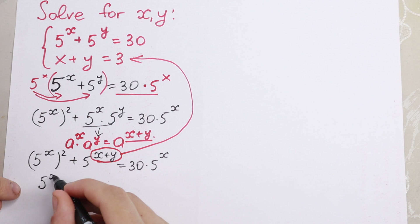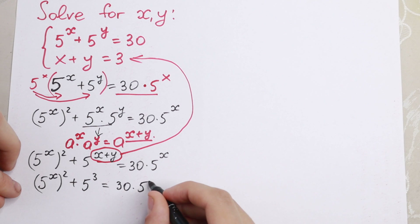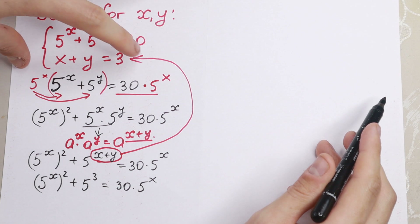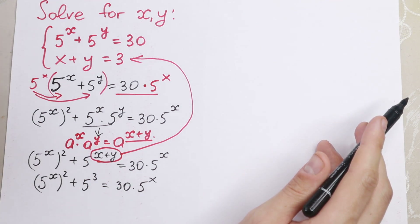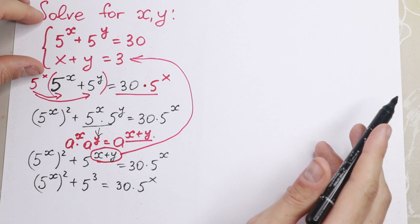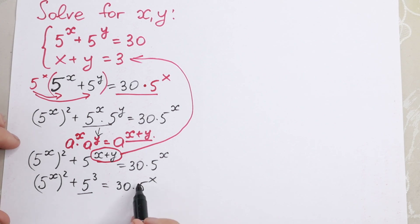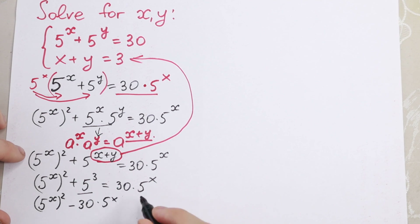What we will have? 5 to the power x squared, plus 5 cubed, equal to 30 times 5 to the power x. I hope you understand this step: firstly, multiplying both sides by 5 to the power x; secondly, using this rule; and moreover, x plus y equals 3. Right here, 5 cubed equals 125. And it's good to bring this element to the left: 5 to the power x squared, minus 30 times 5 to the power x, plus 125 equal to 0.